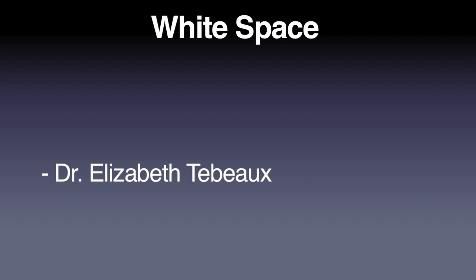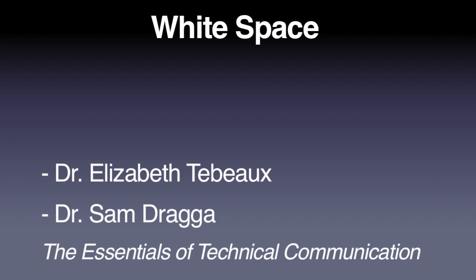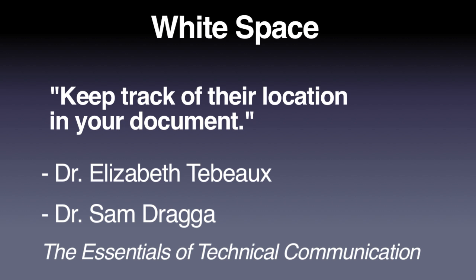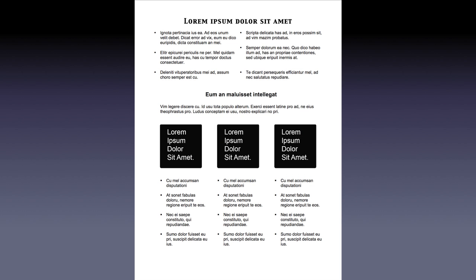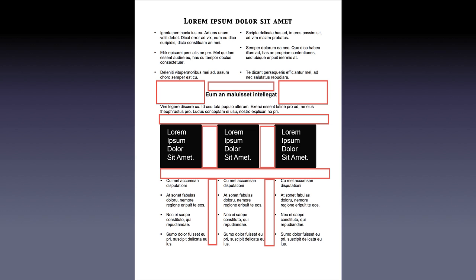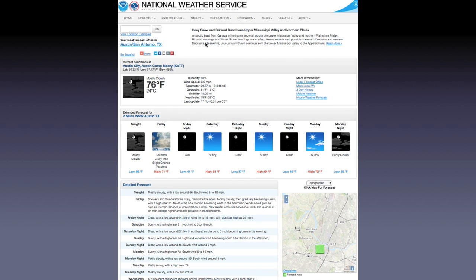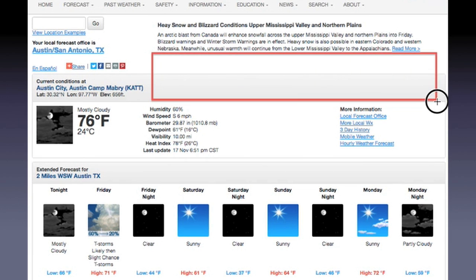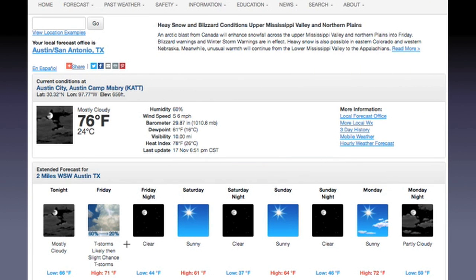Applying these principles will automatically create white space in your document. According to Dr. Elizabeth Toubaud, professor of English at Texas A&M University, and Dr. Sam Draga, former editor-in-chief of IEEE Transactions on Professional Communication, in their book The Essentials of Technical Communication, white space is essential for readers to keep track of their location in a document. In this example, we have further refined the white space to make specific information easier to locate. Looking back at the National Weather Service page, notice the use of white space in each section, which makes key pieces of information, like today's temperature, quickly accessible to the eye.